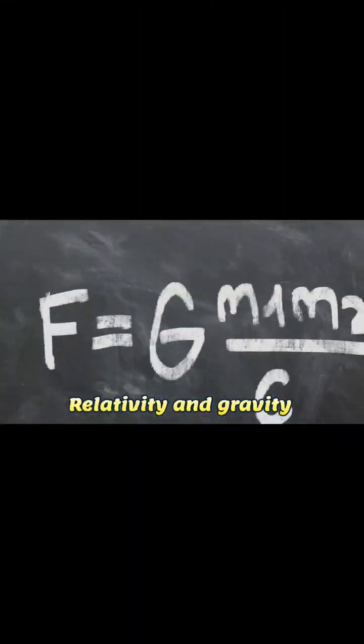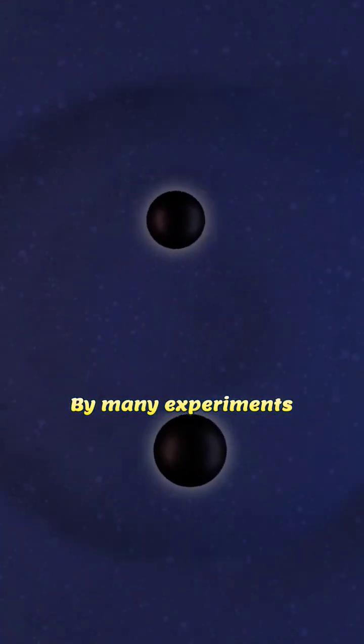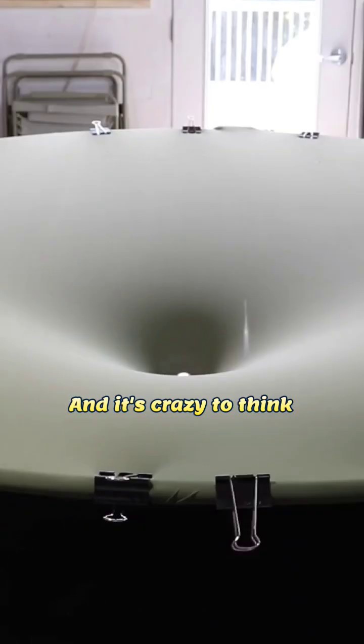Einstein's theory of relativity and gravity has been confirmed by many experiments since he first proposed it. And it's crazy to think that something as simple as a ball on a trampoline can help us understand how the universe works.